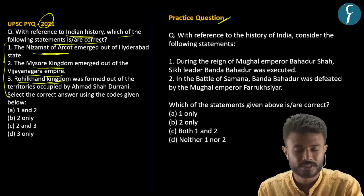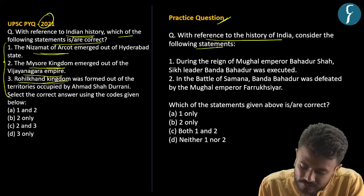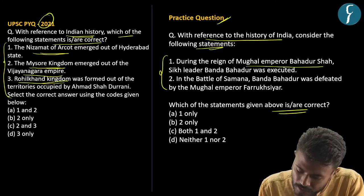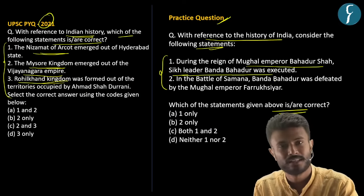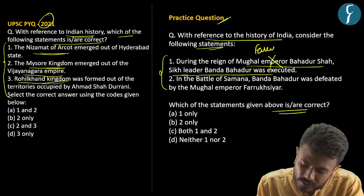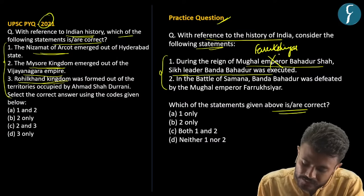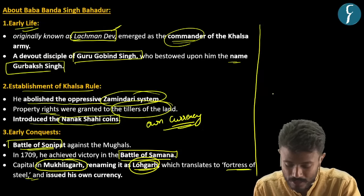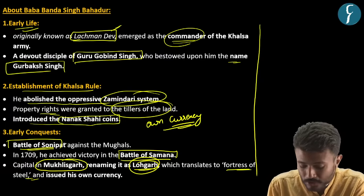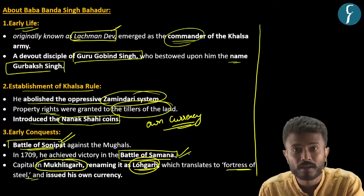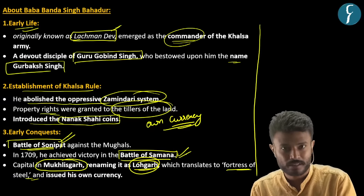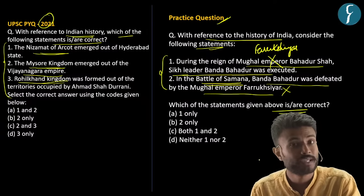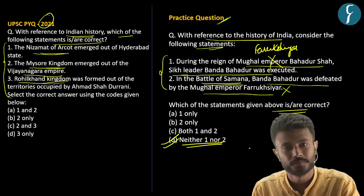Practice question: Statement 1 — Banda Singh Bahadur was executed during the reign of Mughal Emperor Bahadur Shah (incorrect — it was Farrukhsiyar). Statement 2 — in the Battle of Samana, Banda Bahadur was defeated by Mughal Emperor Farrukhsiyar (incorrect — he was victorious in both the Battle of Sonipat and Battle of Samana). Therefore neither statement is correct — answer is option D.